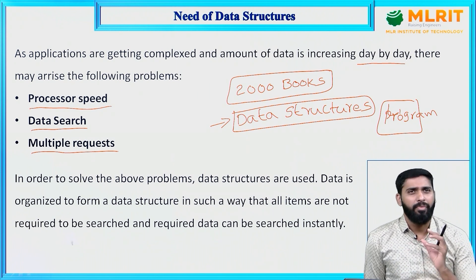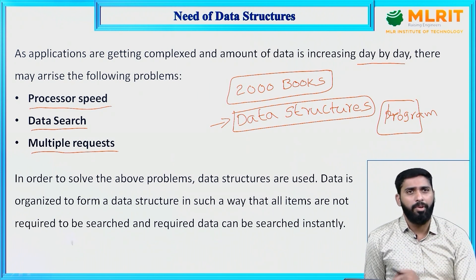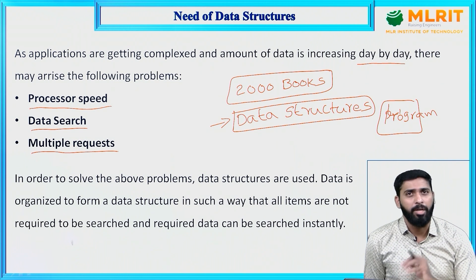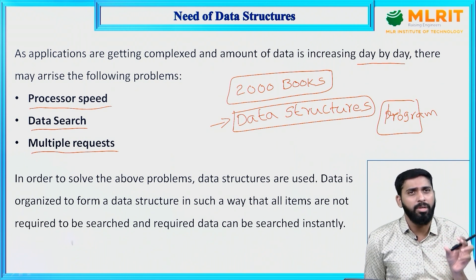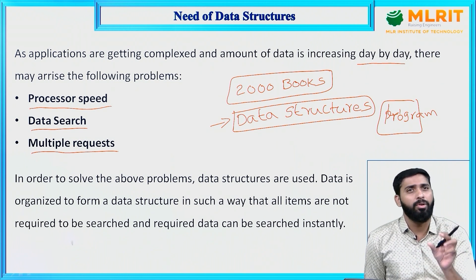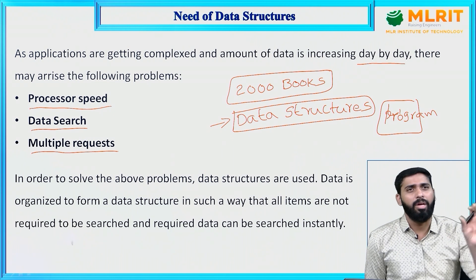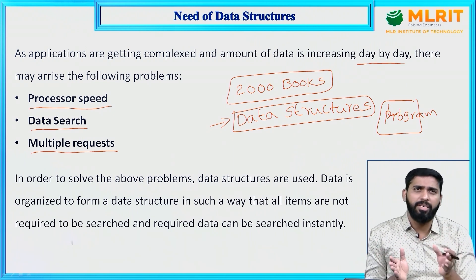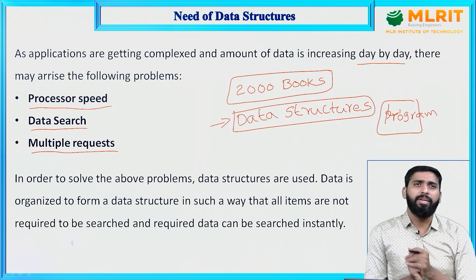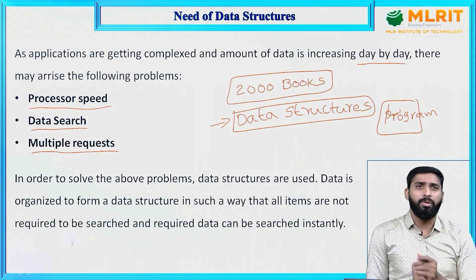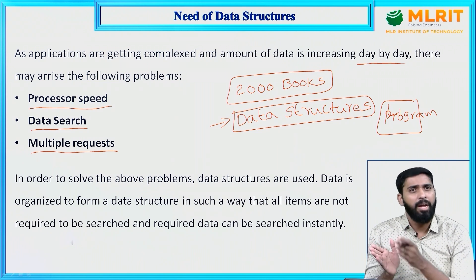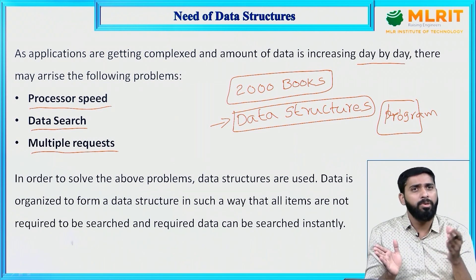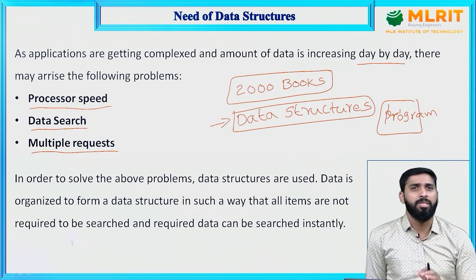In order to solve these problems, data structures are used. Data is organized in such a way that all items are not required to be searched and the required data can be searched instantly. For example, if you organize the books in alphabetical order to retrieve a 'data structures' book, you directly go to the letter D. If data is not organized, you start from the first book and search book by book, which takes more time.